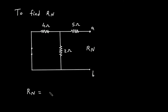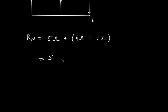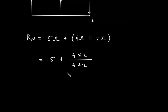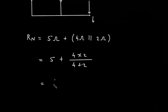So therefore Rn is equal to, from terminal A to B, it is 5 ohm plus 4 ohm parallel with 2 ohm. So this will be 5 plus 4 into 2 divided by 4 plus 2. So it is 6.33 ohm. This is the value for Rn.